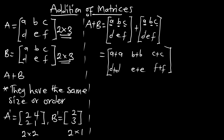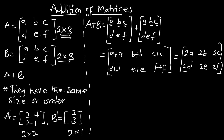So we are going to get A plus A, that is 2A; B plus B, that is 2B; and 2C, 2D, 2E, and 2F. So this is the solution for adding matrix A to matrix B.